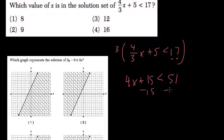We subtract 15 from both sides. 51 minus 15, that's 36, is greater than 4x.